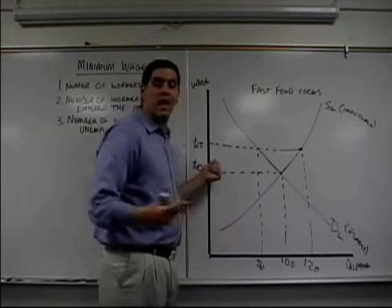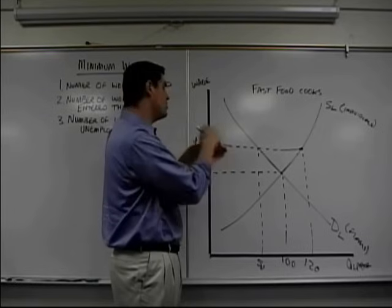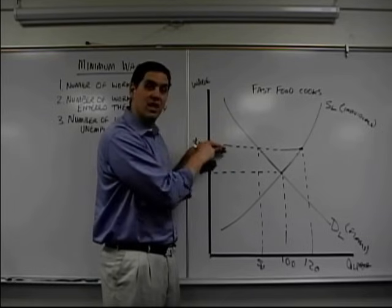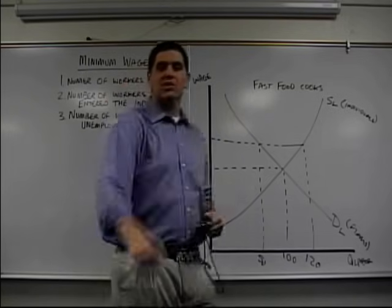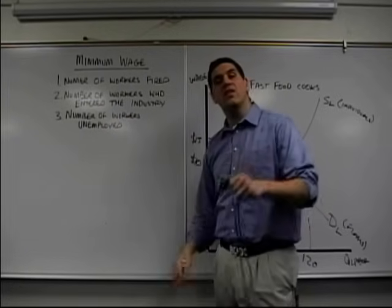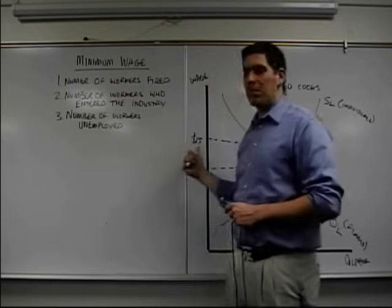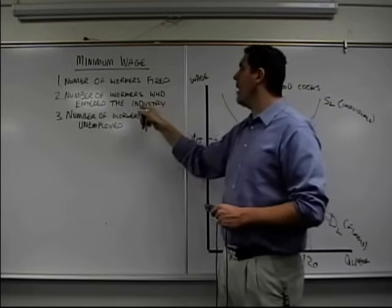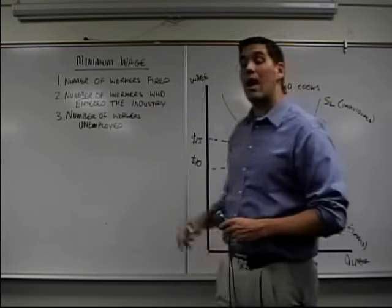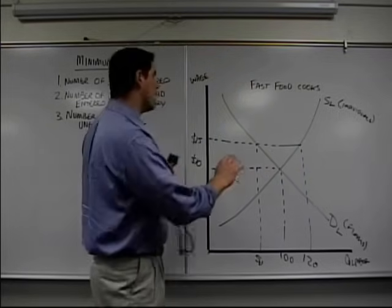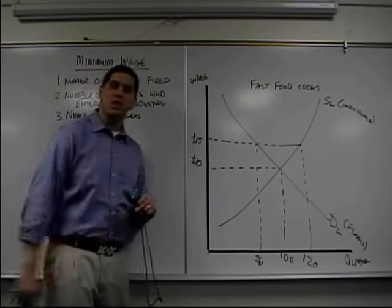Let's say it's a $15 wage floor. Just remember that a wage floor is kind of like a price floor, right? It's right here. The wage can't get down to $10 because the government says you can't hire workers for less than $15. So this is 50, 100, and 120. I have three questions for you. Pause this video and see if you can answer them. First, the number of workers that were fired because of the minimum wage. Second, the number of workers who entered the industry because now it's at a higher wage. And last, the number of workers who are now unemployed because of this new law. Stop the video to answer these three questions. Good luck.